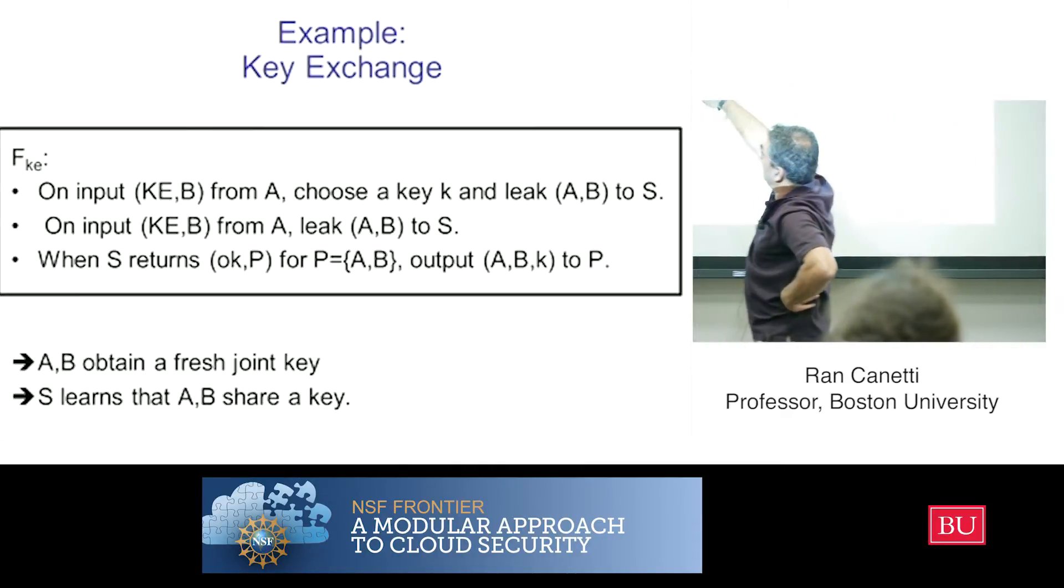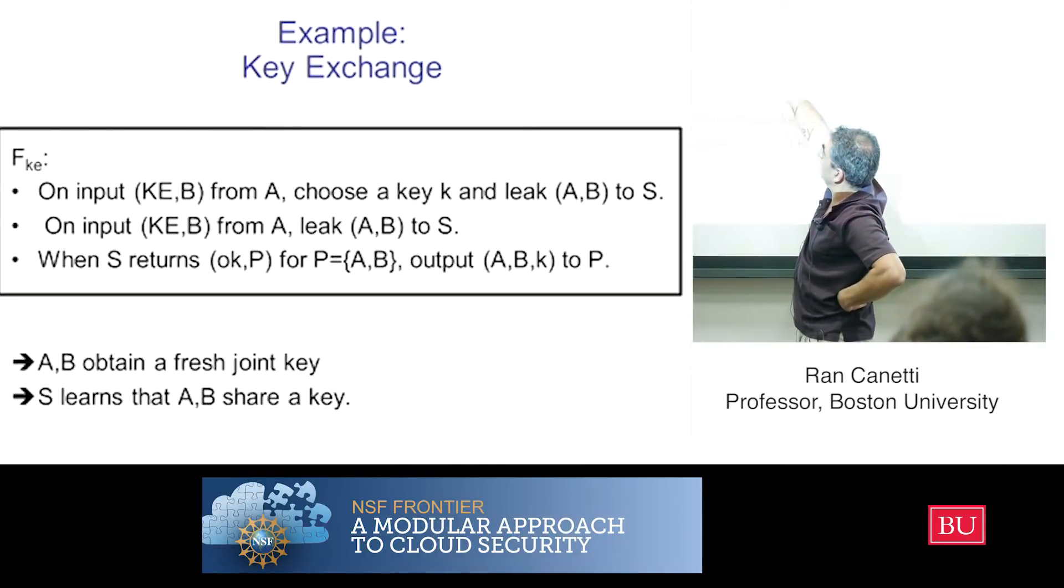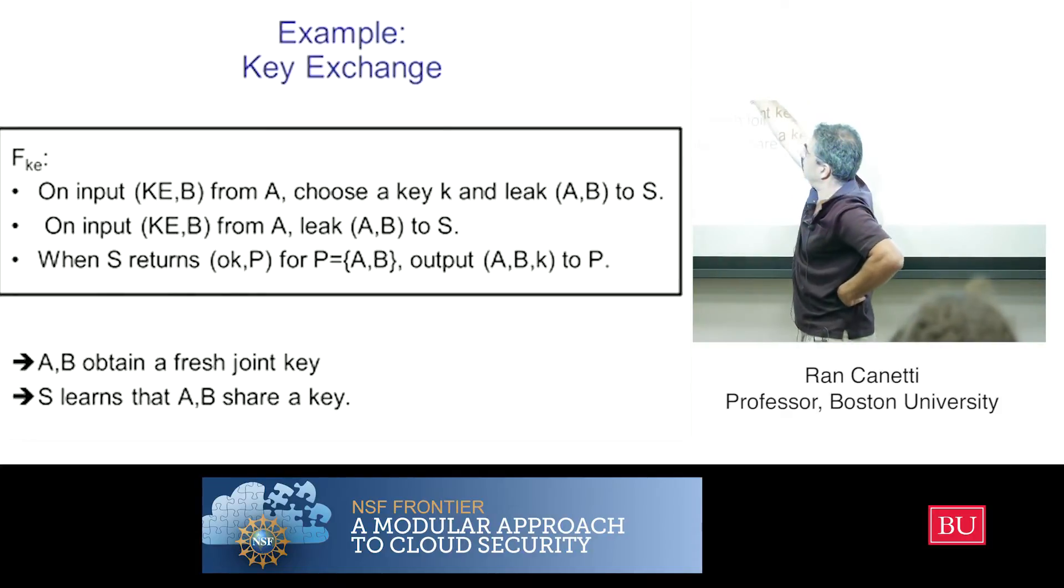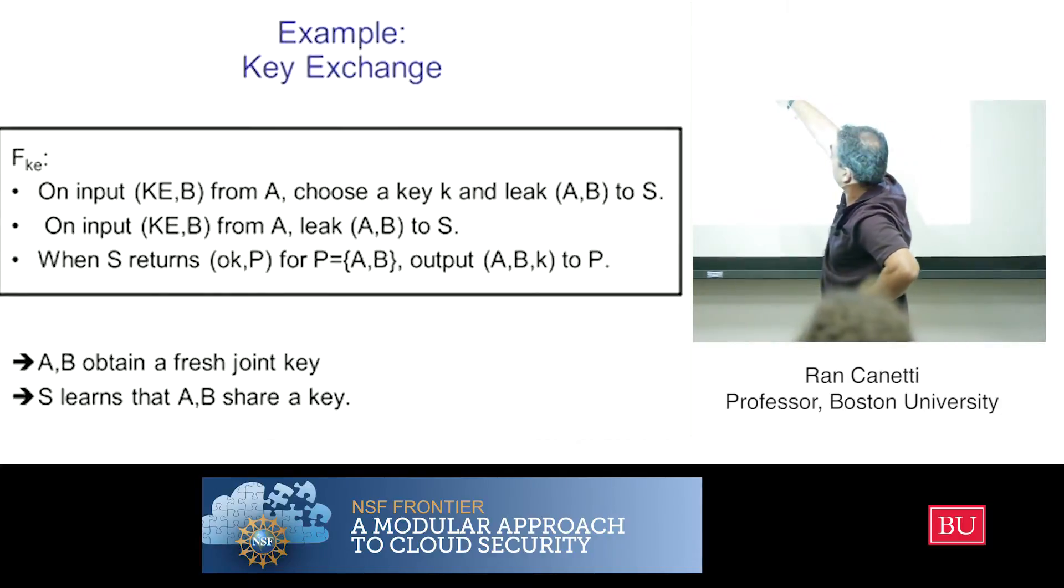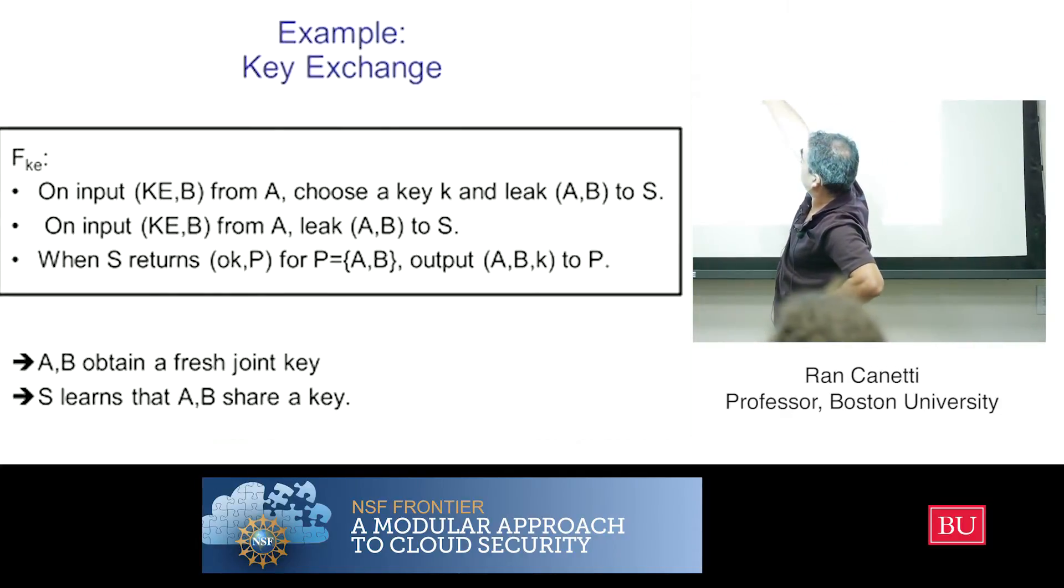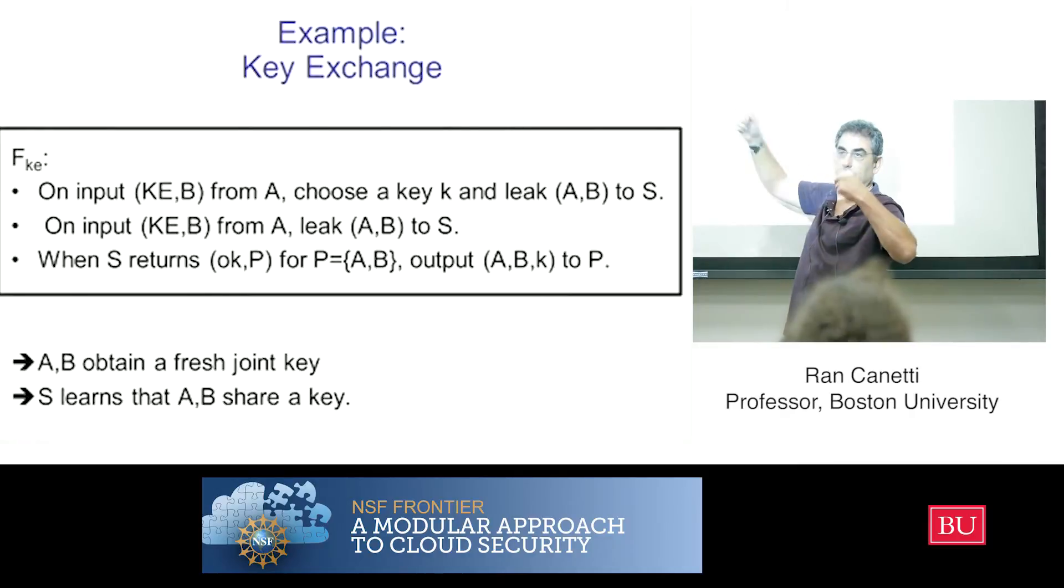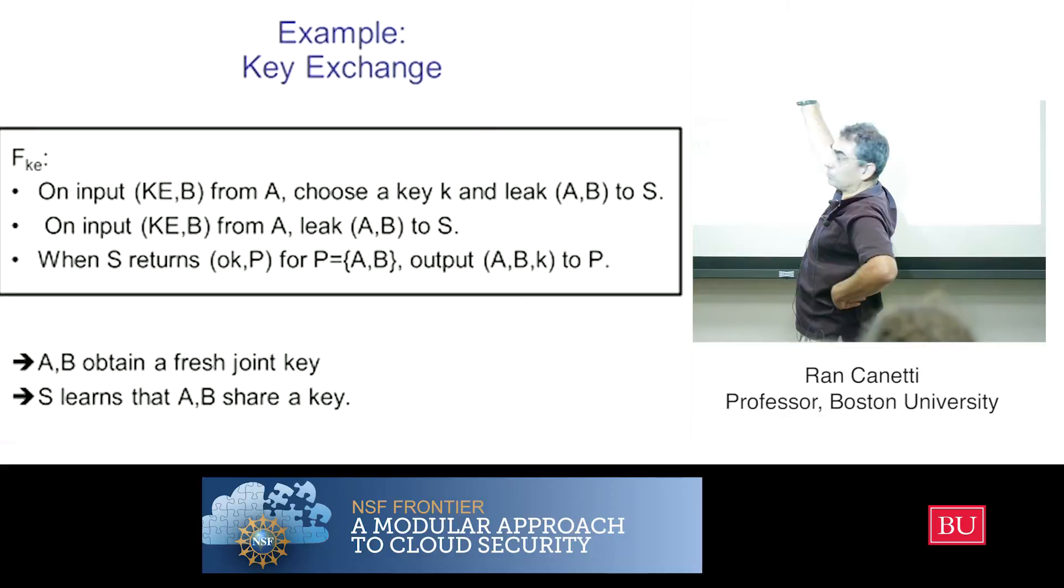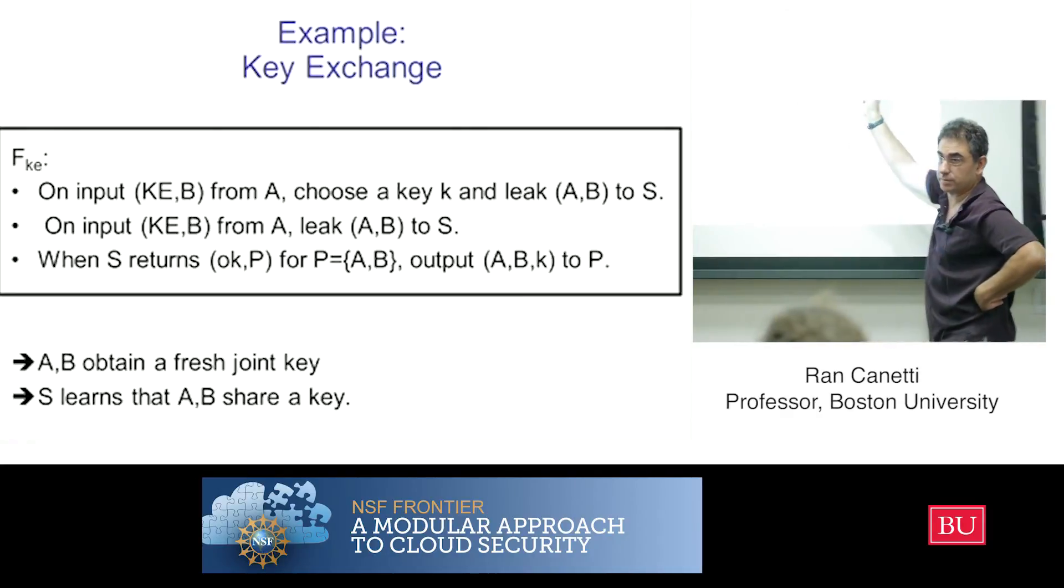And when it gets the corresponding one from A—sorry, this is supposed to be the other way around. So you get it from B, that it wants to exchange a key with A. That's a typo. Then you're going to leak to the simulator. The simulator knows that both parties want to exchange a key with each other. And then when the simulator returns okay, it's okay to output the key to A or to B. Then you output the key to the corresponding party.